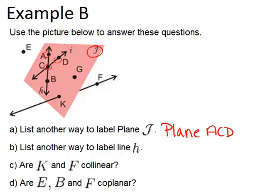Alright, list another way to label line H. So this is line H right here, and we can see it's labeled right there. So if we don't want to label it line H, we can pick any two points on H, which would be A, C, or B. Pick two of those to label it.